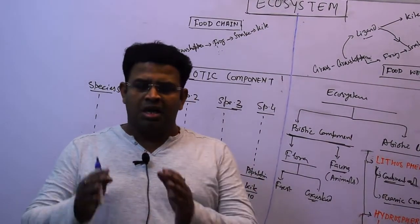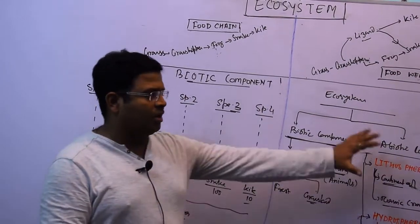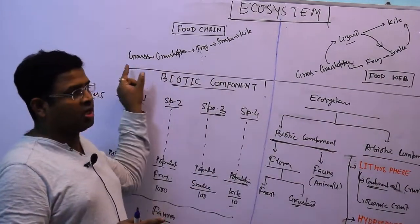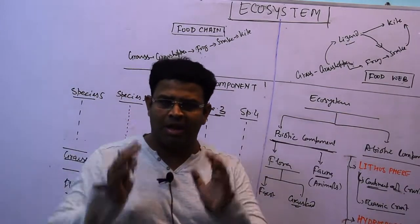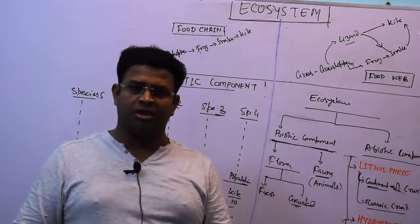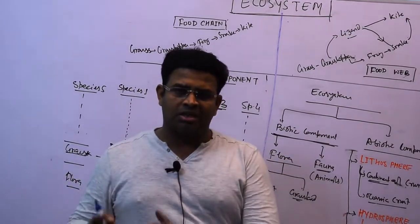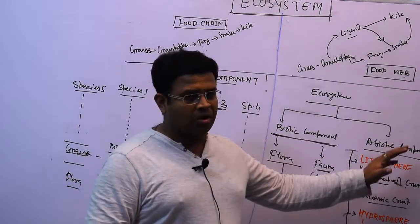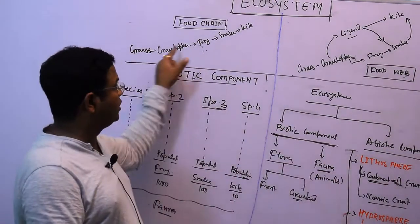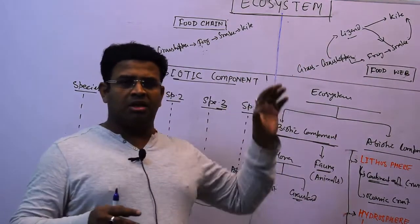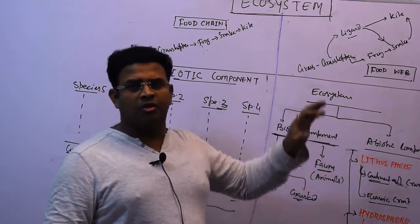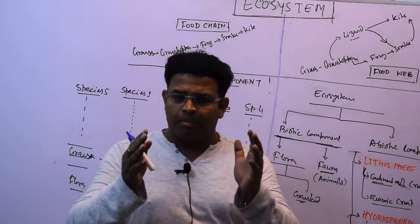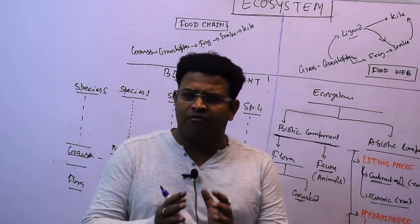Therefore, the definition of ecosystem is: it is an interaction between biotic and abiotic communities, as well as interaction within the biotic community in the form of food chain and food web. This is the definition of ecosystem, which you can understand very easily.